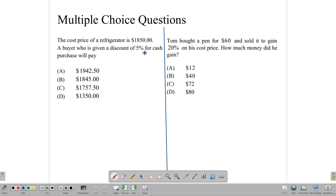Let's look at another one. And these are multiple choice questions. And when it comes to multiple choice questions, you need to be very, very careful in how you read. So let's start with this one. It says the cost price of a refrigerator is $1,850. A buyer who is given a discount of 5% for cash purchase will pay how much? So if you buy this refrigerator for cash, you're going to get a 5% discount. And if you do so, how much will you pay?